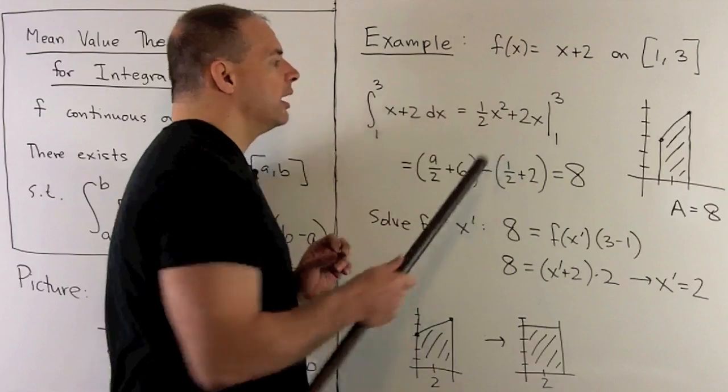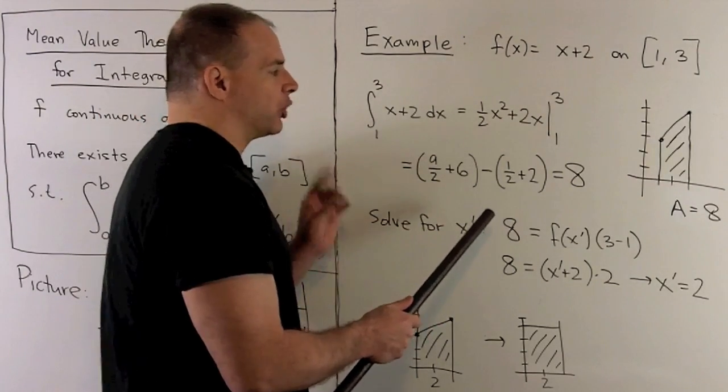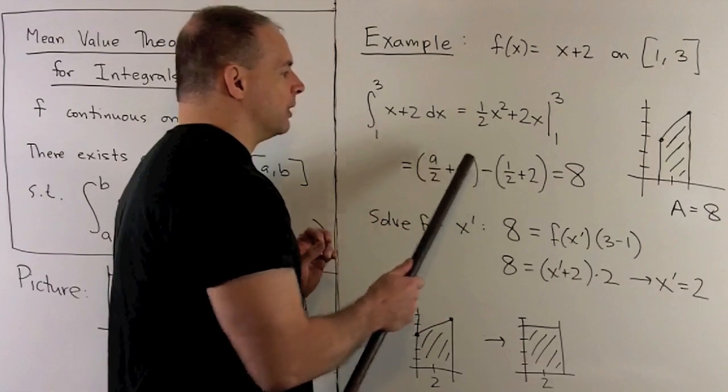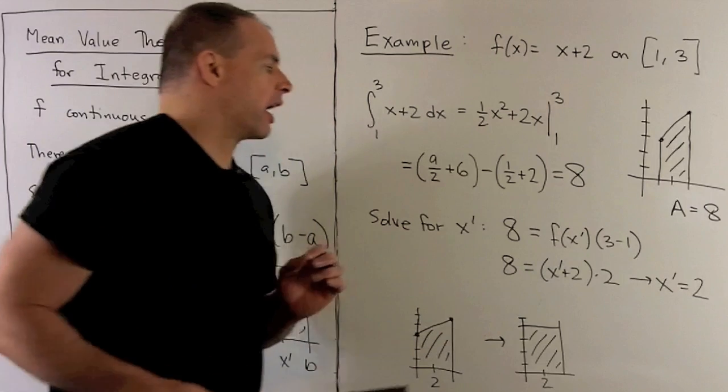Then, we evaluate at 3 and 1, take the difference. So, there's 3, there's 1. I make sure I use parentheses, so that I distribute the minus sign correctly. And then, our answer is going to be 8, which agrees with our answer over there.